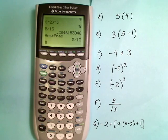Okay, all right, so now we have this big chunk of math here. So -2 + [4(5-3) + 1], close bracket. All right, so we have these brackets here.